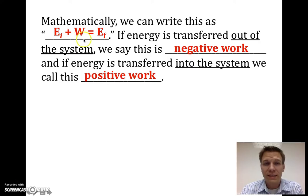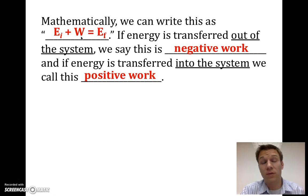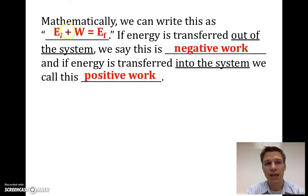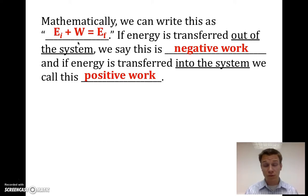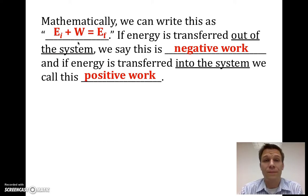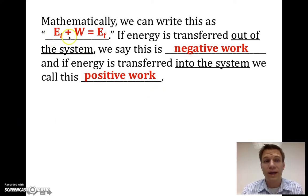When we calculate the work using a formula, the values plugged in will make the term positive or negative. Energy is a scalar, not a vector, so we don't change the sign in front of the W. Later, when we have formulas to calculate work done, things in those formulas will carry positive or negative signs, making the overall term positive or negative. When writing in variables, you always write it as plus W, even if energy is leaving the system.